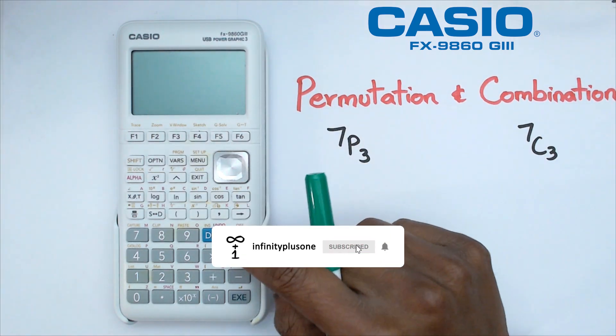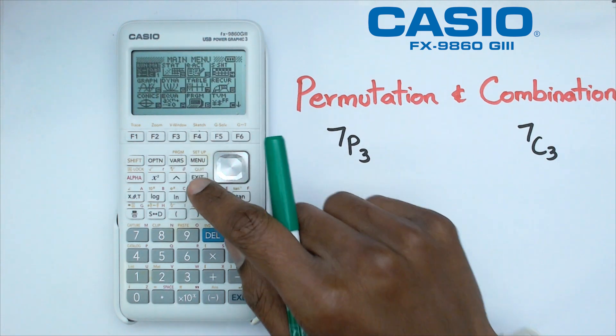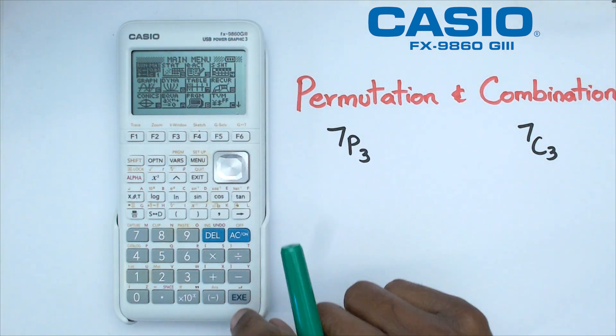All right, so the first thing we want to do is switch on the calculator, go into main menu, and we're going to go into the normal run mode.